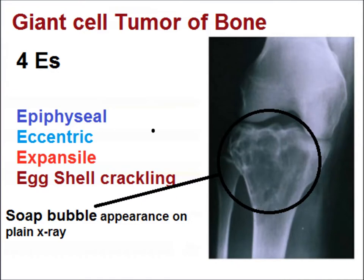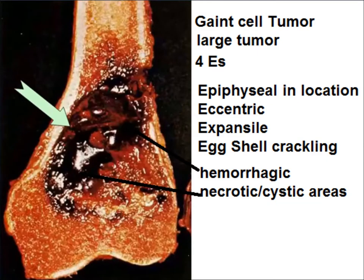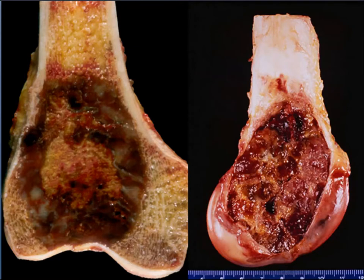The tumor is epiphyseal in location, eccentric, expansile, and on examination there is egg-shell crackling, giving a soap-bubble appearance on plain X-ray. Grossly, it is epiphyseal in location, eccentric, expansile, with hemorrhagic, necrotic, and lytic areas.